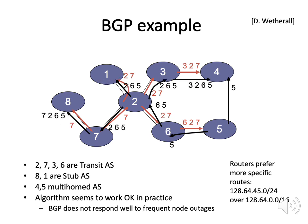The result is that AS 8 learns that AS 7 can handle traffic for AS 7, 2, 6, and 5. AS 5 learns that AS 6 can handle traffic for AS 6, 2, and 7. AS 4 learns that AS 3 can handle traffic for AS 3, 2, and 7. This isn't complete because we haven't done everything, but you can see how by iteratively passing this data around, each autonomous system learns which traffic the other autonomous systems can handle.